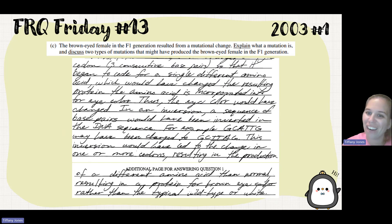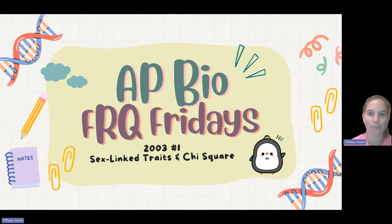The amino acid is incorporated into the eye color. Thus, the eye color would have changed in an inversion. The sequence of base pairs would have been inverted in the DNA sequence. For example, G-C-A-T-T-G would have been changed to G-C-T-T-A-G. This inversion would have led to the change in one or more codons resulting in production of a different amino acid than normal, resulting in a protein producing brown eyes rather than typical wild type or white. So I hope that was helpful. Remember, AP Bio pain was just success. Bye, y'all.